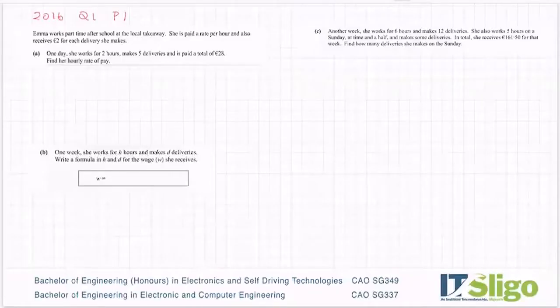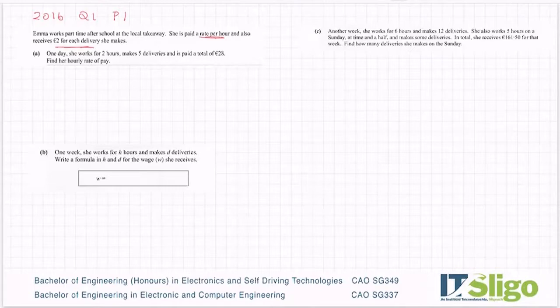Okay, 2016, the first question on paper 1 in the Leaving Cert ordinary level was a words-to-equation algebra type one. So Emma works part-time after school at the local takeaway. She is paid a rate per hour and also receives two euros for every delivery that she makes. One day she works for two hours, makes five deliveries, and is paid a total of 28 euros. Find her hourly rate of pay.